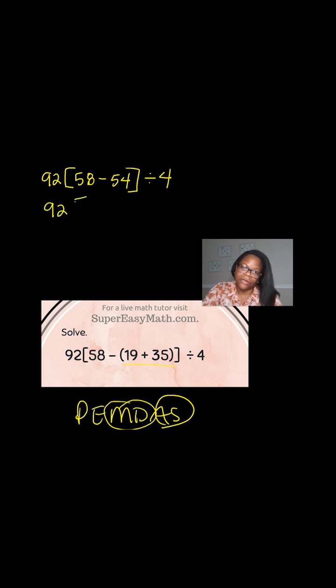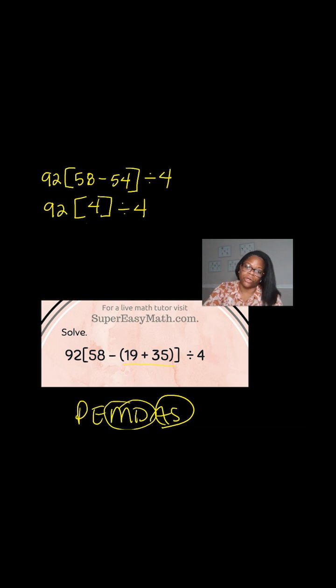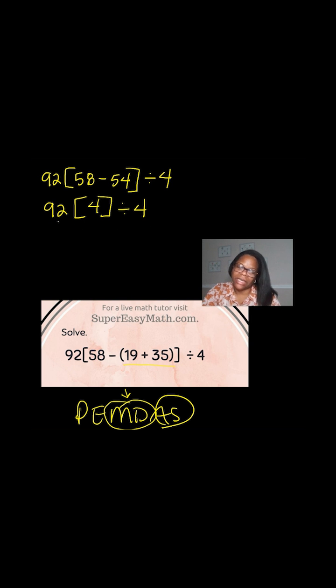Now, if I'm looking at this, I know that I have multiplication here and I have division here. When dealing with order of operations, those happen at the same time — they're on equal level playing fields. So what this means is I'm going to take 92, multiply it by 4 and then divide it by 4, which just undoes itself. So I'm going to basically scratch this off, and I know the answer is 92.